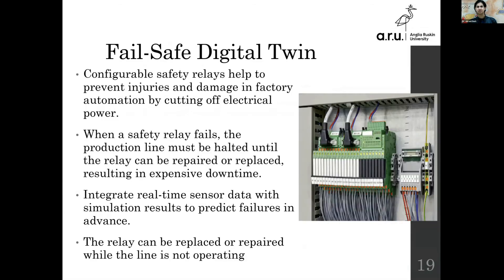A useful example comes from ANSYS, a large corporation that develops software primarily used for engineering simulations. They worked with a company to create a digital twin for their configurable safety relays. These relays are there to prevent injuries — if there is any issue or damage on the factory floor with automation, the relay simply cuts off electric power so that damage cannot be extended.